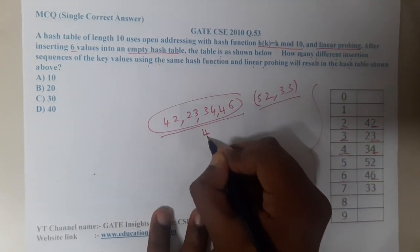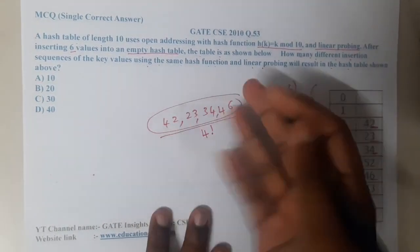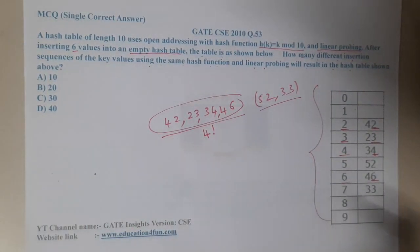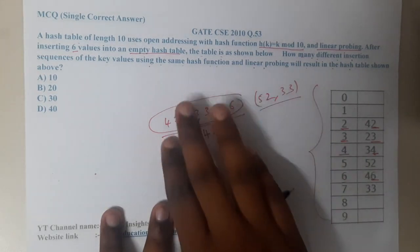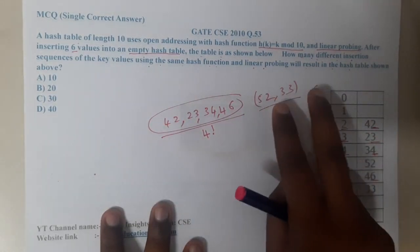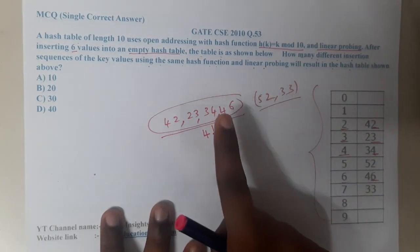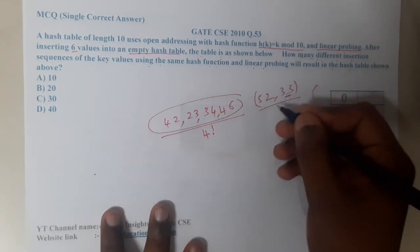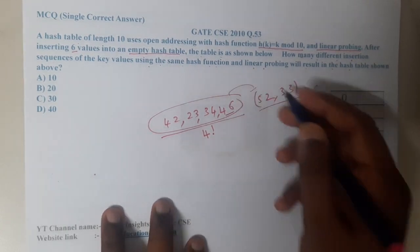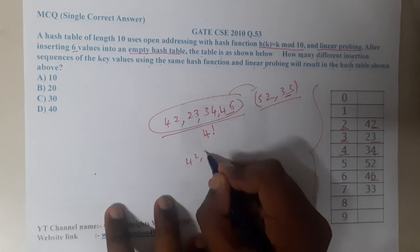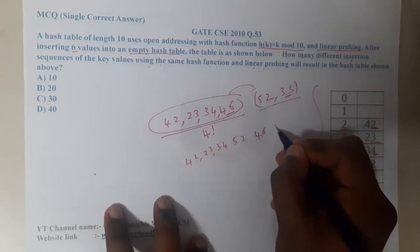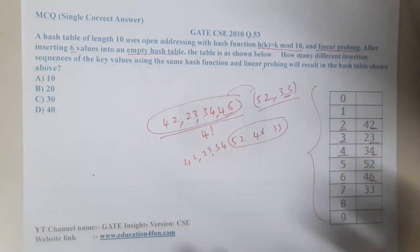This is a question which relates to both permutation and combination as well as hashing. The four elements can be in any combination, so any order you give is okay — that gives four factorial. But when it comes to 52 and 33, the order is fixed. However, there is one more twist: 33 can come before or after 46. So after 42, 23, 34, you can have 52, then 46, then 33.